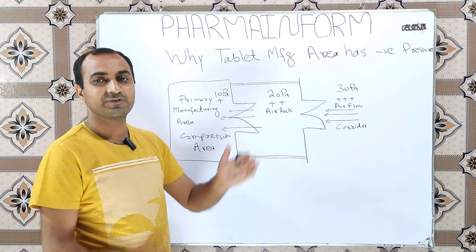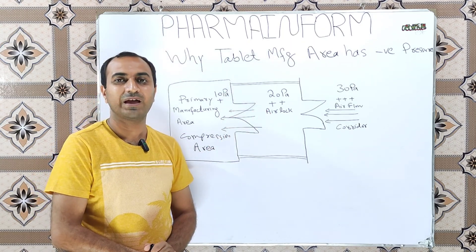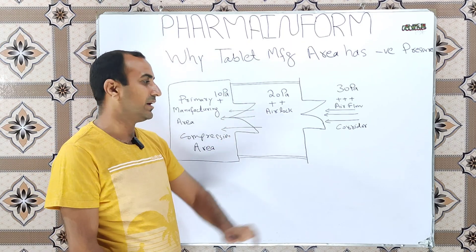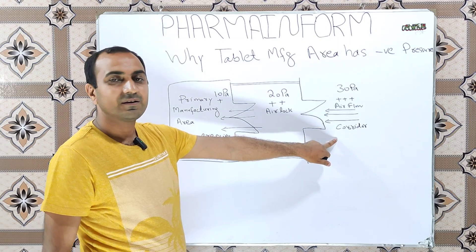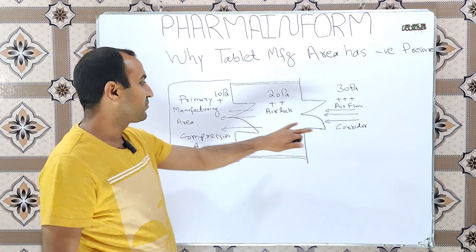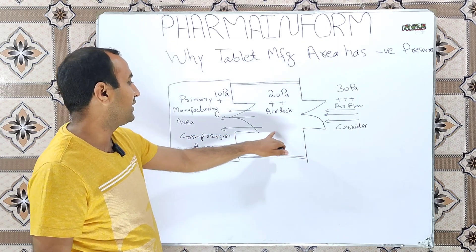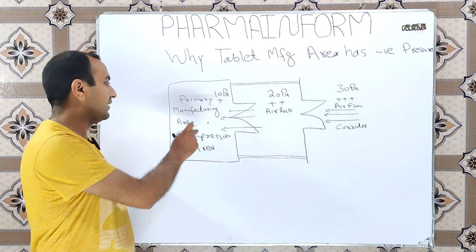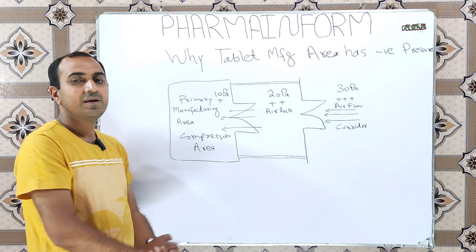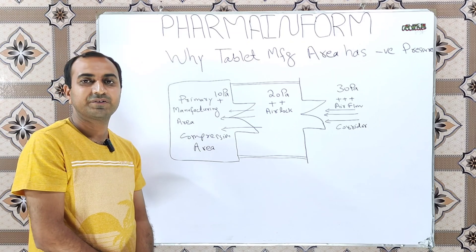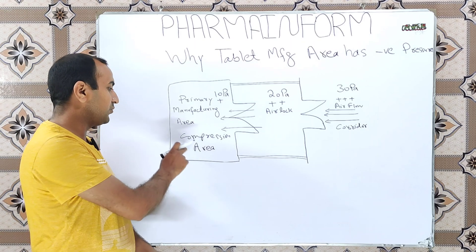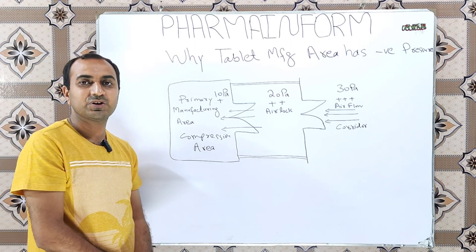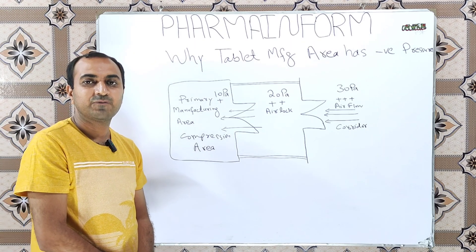In the pharmaceutical industry, suppose we have a simple layout. Here we have the corridor, here we have the air lock, and here is the primary manufacturing area for the tablet — suppose it is the compression room.